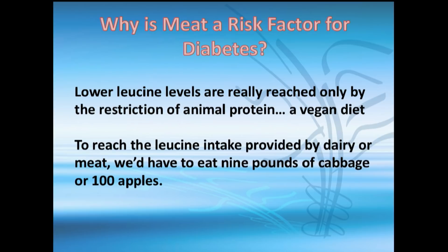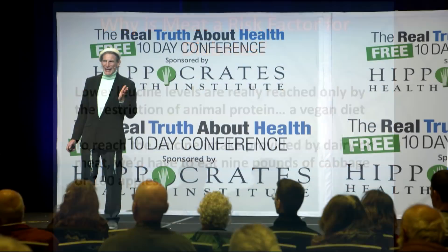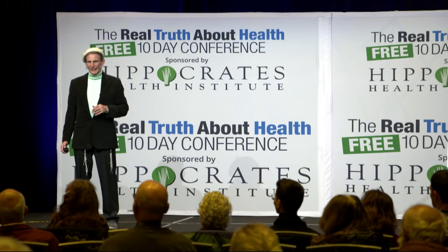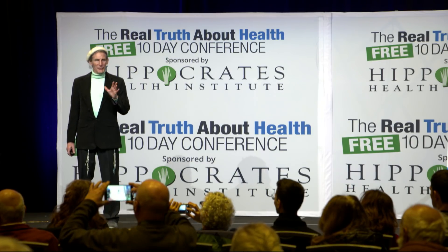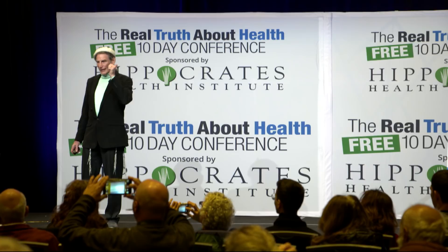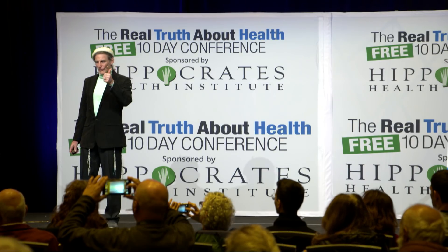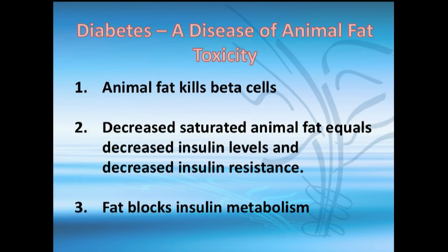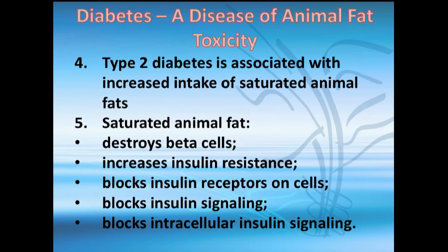On a vegan diet, you'd need something like 9 pounds of cabbage or 100 apples to get the amount of leucine found in meat — it's just not going to happen. Research shows that when you decrease animal fat, you decrease insulin resistance and insulin levels, because you're no longer blocking insulin metabolism.